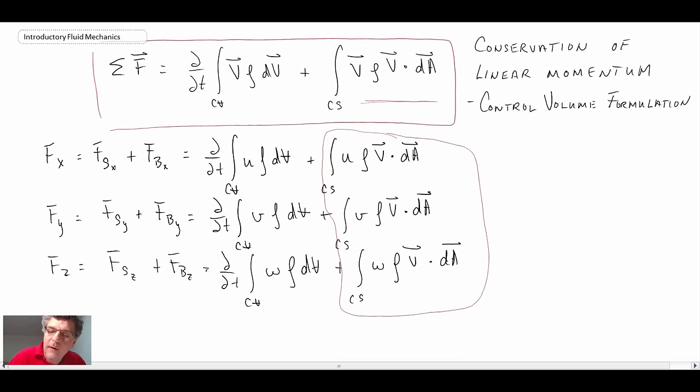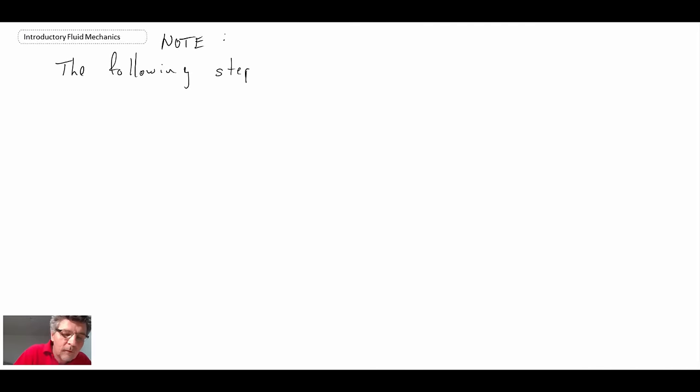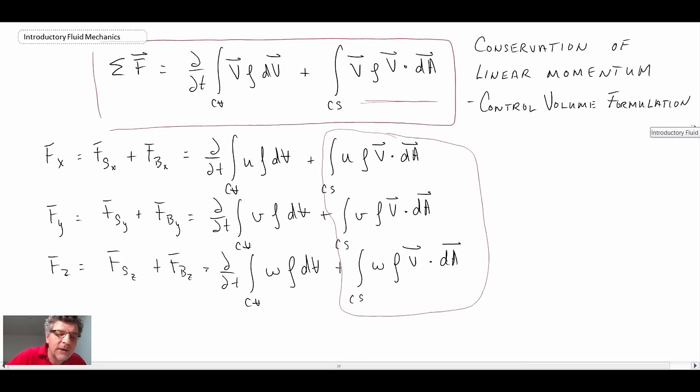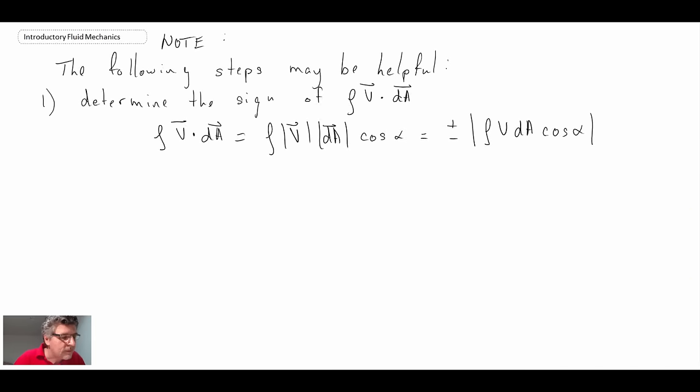So the first thing is you'll want to determine the sign of the mass flow rate. So the rho v dot dA. So let's look back at our equation. So that means that you'll want to figure out the sign of this, this, and this, and figure that out independently first.